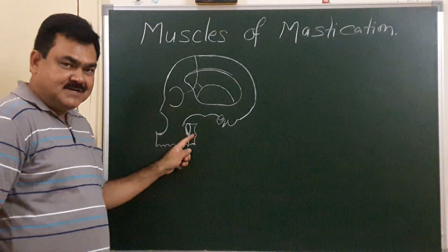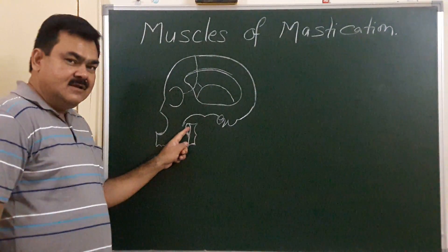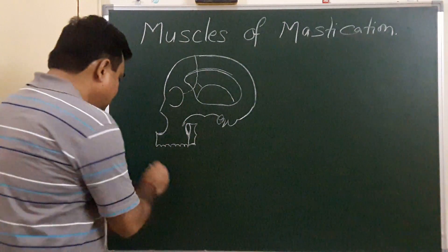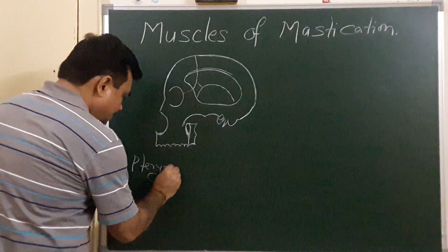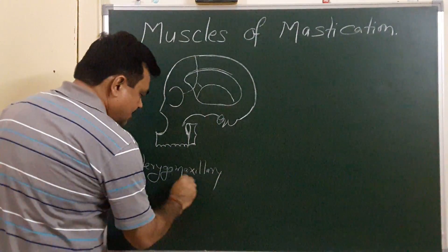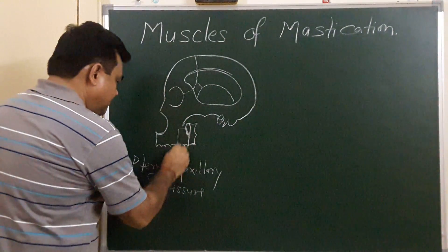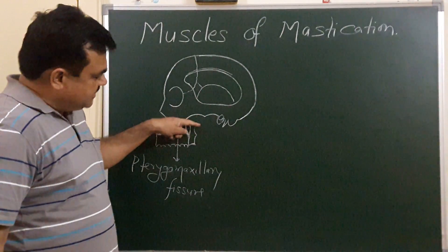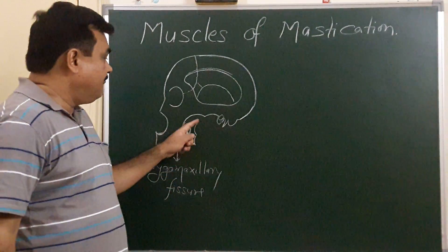Here is the lateral pterygoid plate. And this is a fissure known as the pterygomaxillary fissure. Below the zygomatic arch there is a fossa known as the infratemporal fossa.